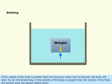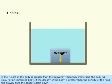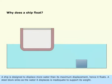If the weight of the body is greater than the buoyancy when fully immersed, the body will sink. For an immersed body, if the density of the body is greater than the density of the fluid, gravity pulls the denser object down. A ship is designed to displace more water than its maximum displacement, hence it floats.